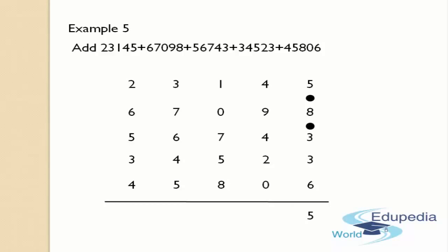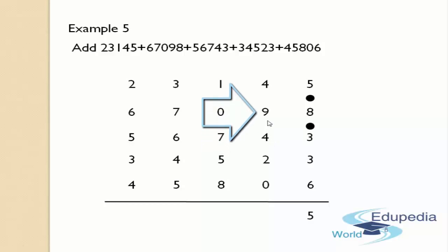Now let us add this count to the first digit of the tens column: 2 plus 0 gives 2, and 2 plus 2 gives 4. Again, 4 plus 4 gives 8, and 8 plus 9 gives 17. So 17 is a two-digit number, so leave 1 and place a dot on the top of 9. The remaining digit is 7.